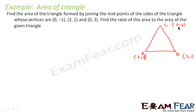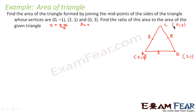First we have to find the midpoint of the vertices. So D is nothing but the midpoint of A and C. D of X will be 0 plus 0 by 2, that is 0. D of Y will be minus 1 plus 3 by 2, that is 2 by 2, that is 1. So D point is (0, 1).